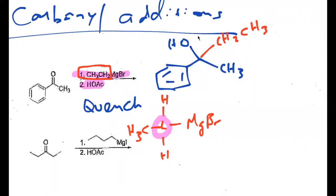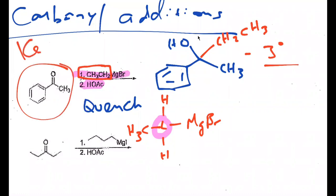What type of alcohol is that? Tertiary. Which means the starting material will be a ketone. You see how they correlate — if I start with a ketone, I always end up with a tertiary alcohol. What do you expect for the next example?